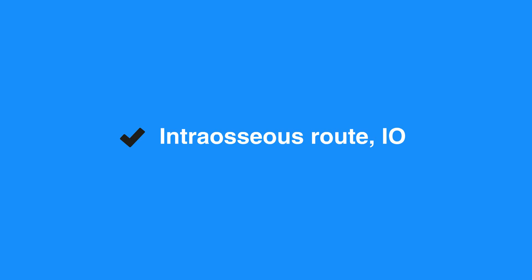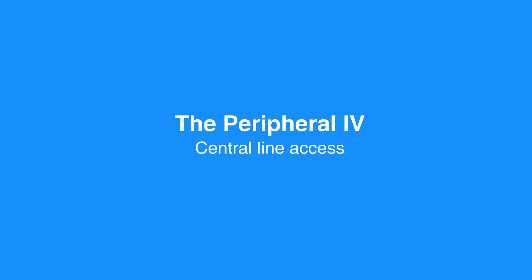Let's review the priorities for each route of access. The peripheral IV is preferred for drug and fluid administration unless central line access is already available. Central line access is not necessary during most resuscitation attempts, as it may cause interruptions in CPR and complications during insertion. Placing a peripheral line does not require CPR interruption.